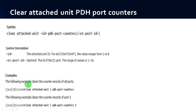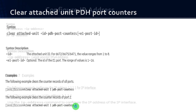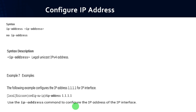If you want to clear the records of all ports, use the command: clear attached-unit 1 pdh-port-counters. If you want to clear a specific port, for example port number 2, use: clear attached-unit-1 pdh-port-counters 2.